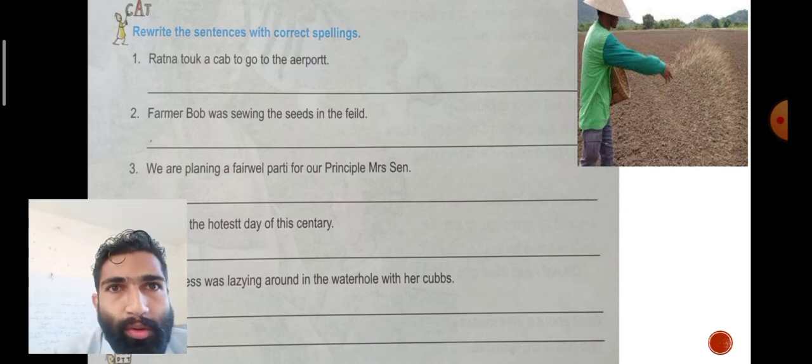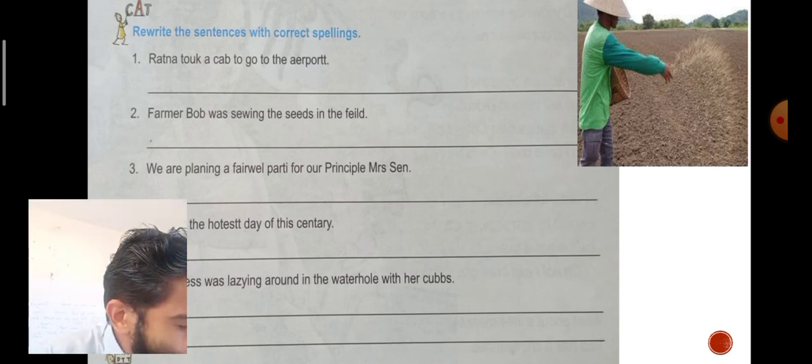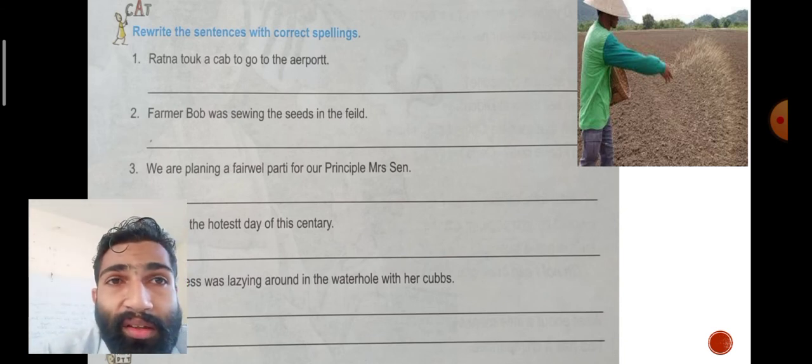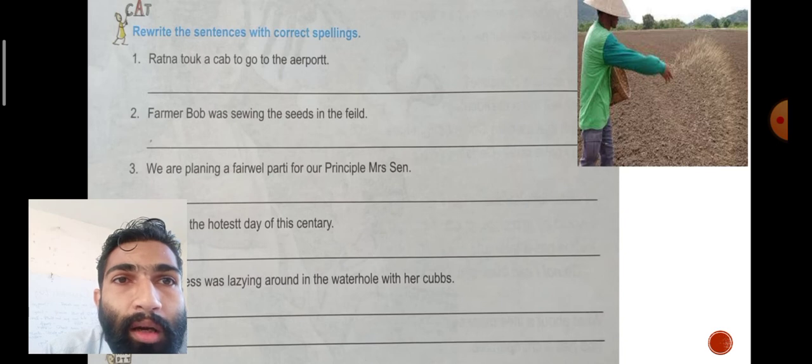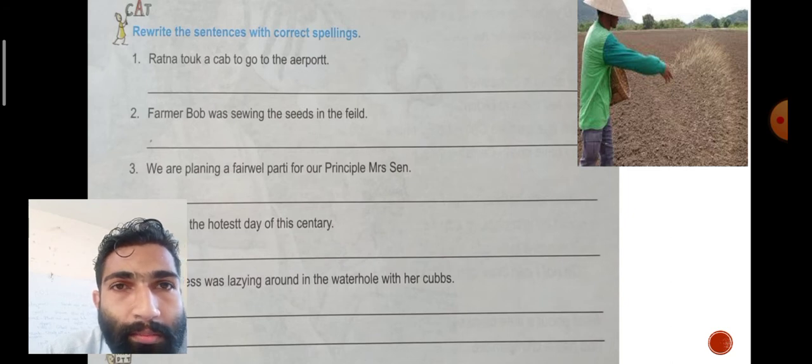Now rewrite the sentences with correct spelling. Retina t-o-u-k a cab to go to the a-e-r-p-o-r-t-t. Farmer B-o-b was s-o-a-c-w-i-n-g the seeds in the field f-e-i-l-t. Is that correct spelling? No, then you have to correct it.